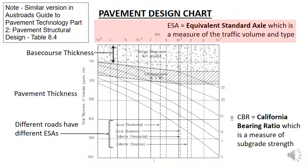The x-axis is the Equivalent Standard Axle, or ESA, and it is a measure of the volume and type of traffic using the road. A road with more vehicles is going to have a higher ESA than one with fewer vehicles. A road with a high proportion of heavy vehicles is going to have a higher ESA than a road with few heavy vehicles. Note this is plotted on a log scale, like the grading curve we looked at for base course aggregates, because we need to consider a wide range of values. The traffic flows and hence the ESA of a residential street is 10 times smaller than that of a collector road, so the log scale helps us to see the whole range of ESA values.